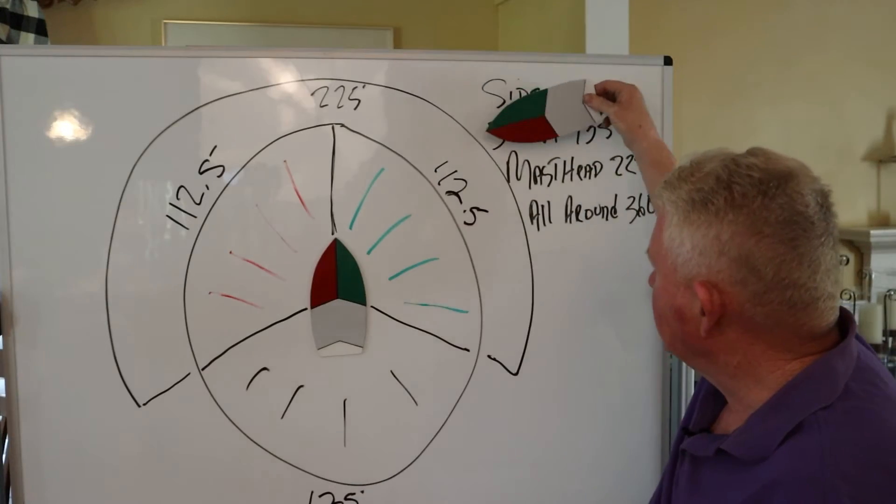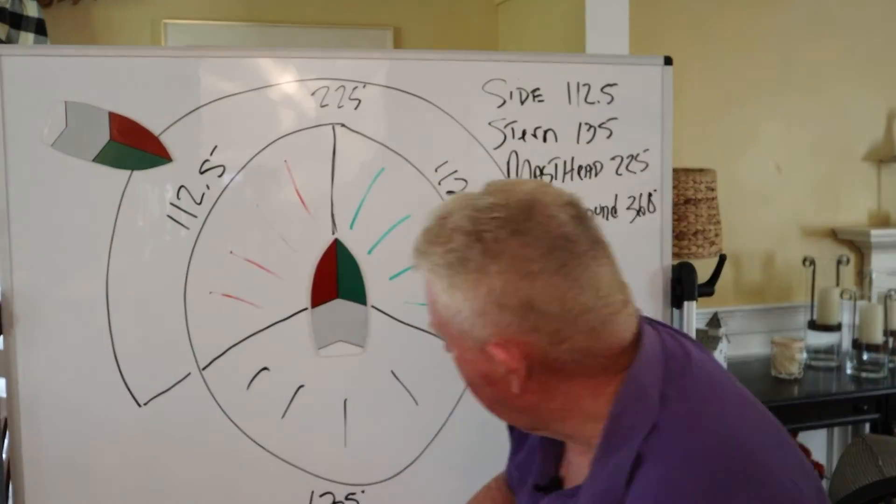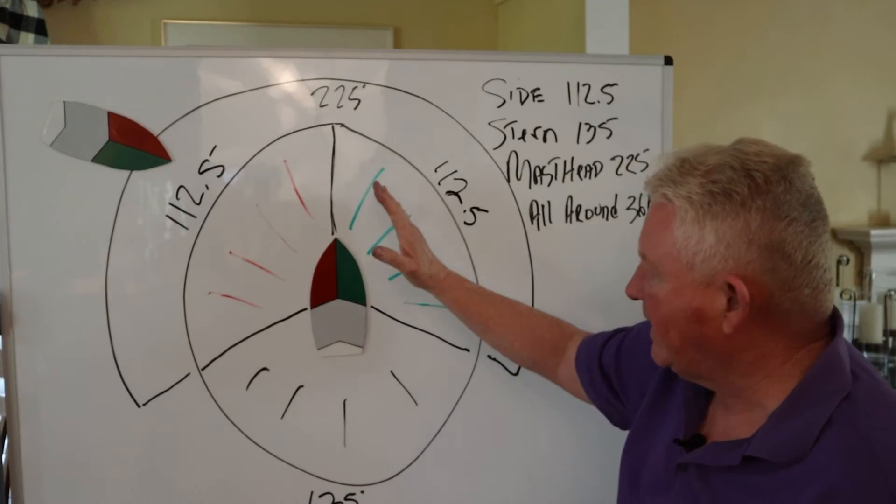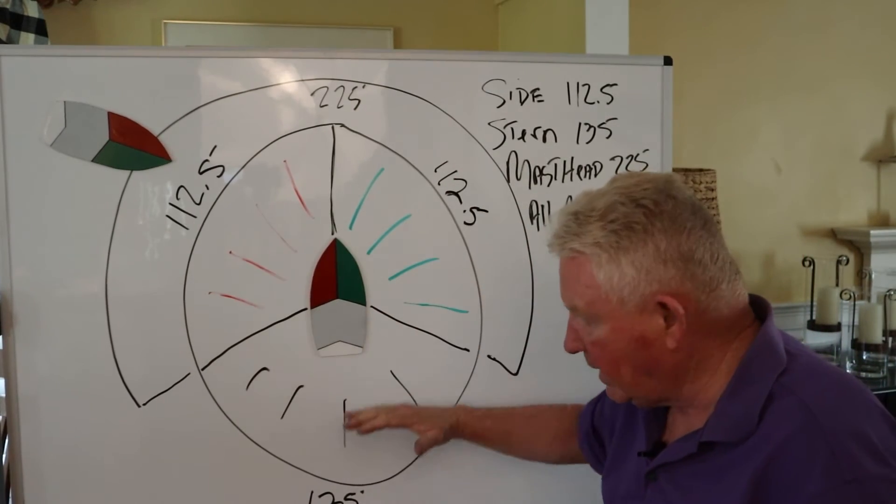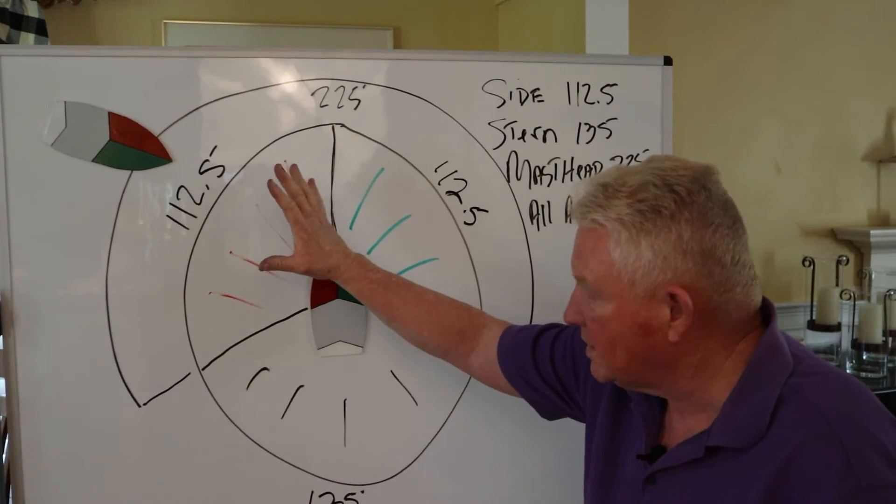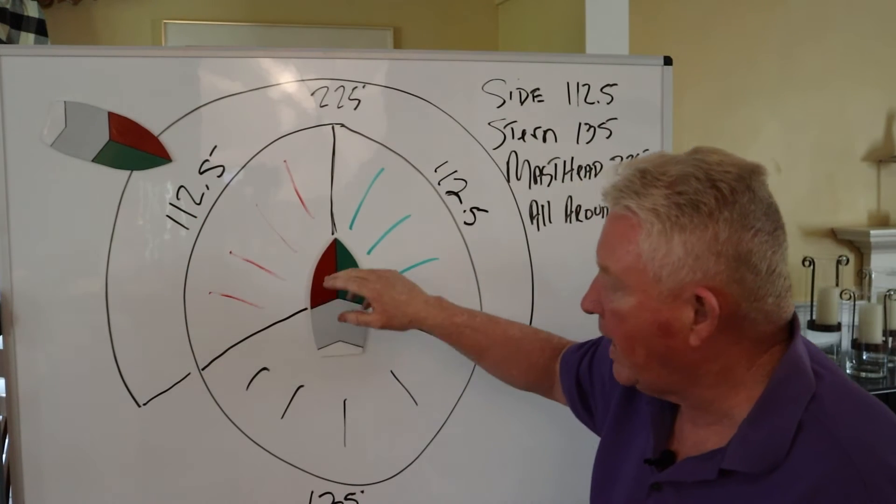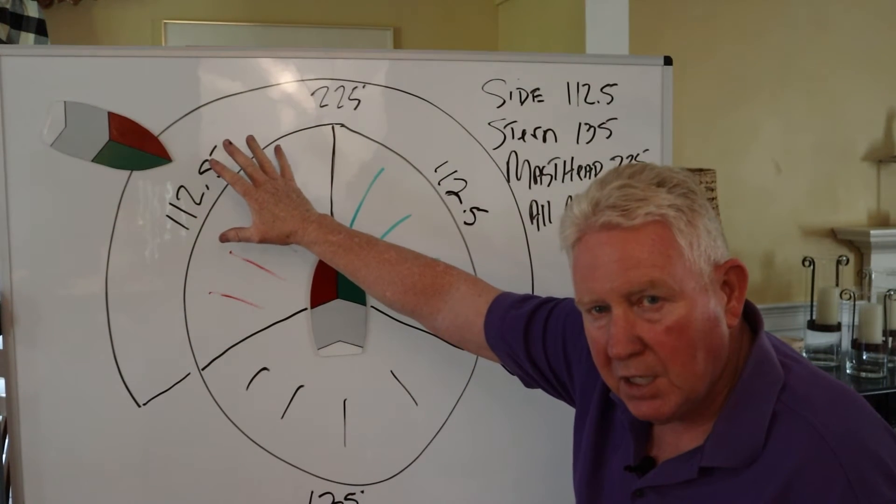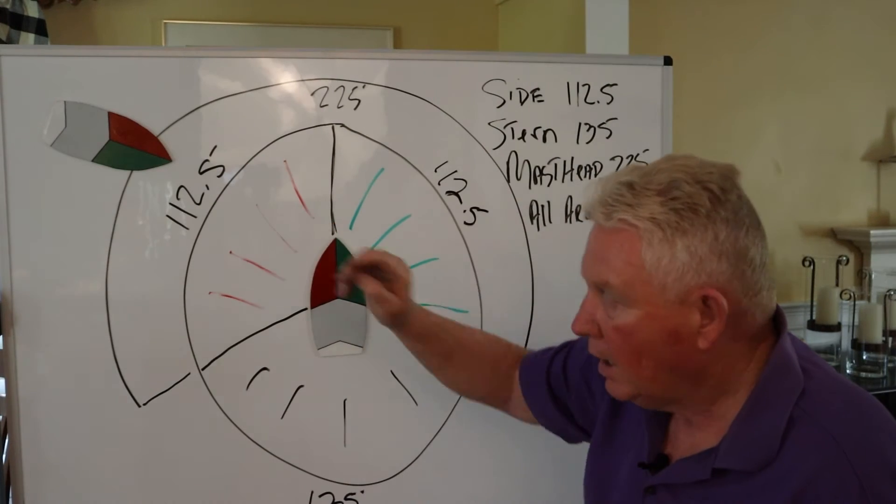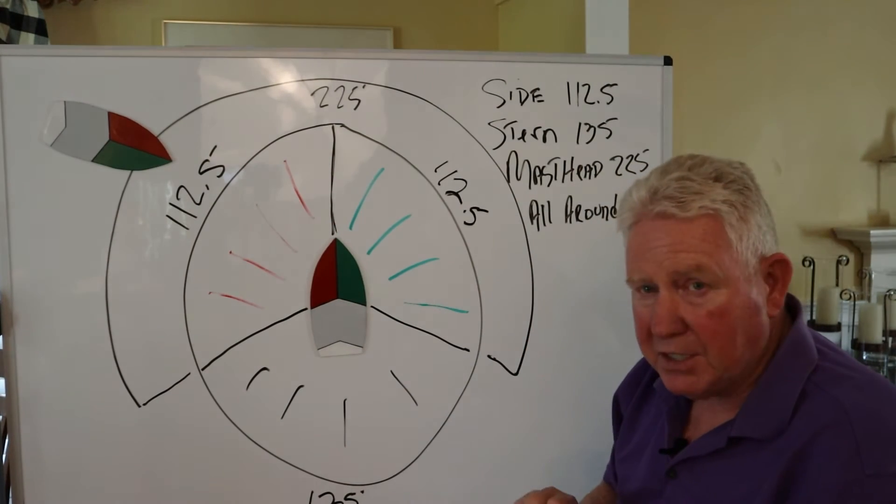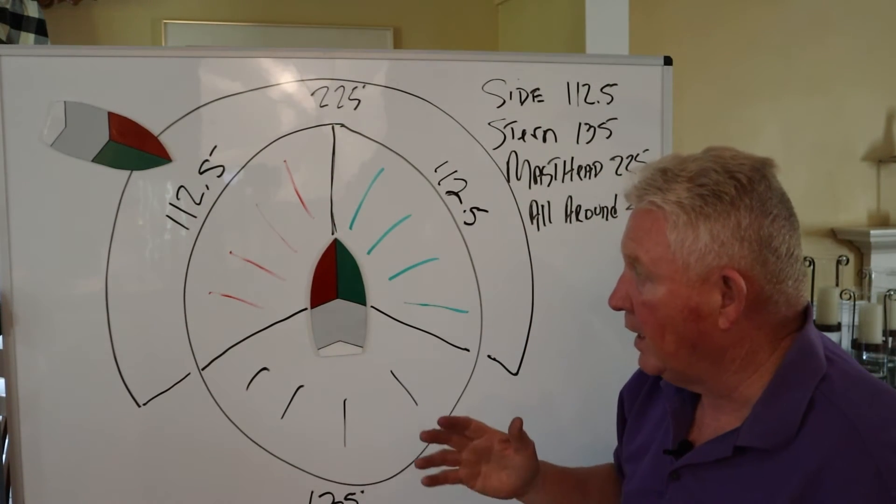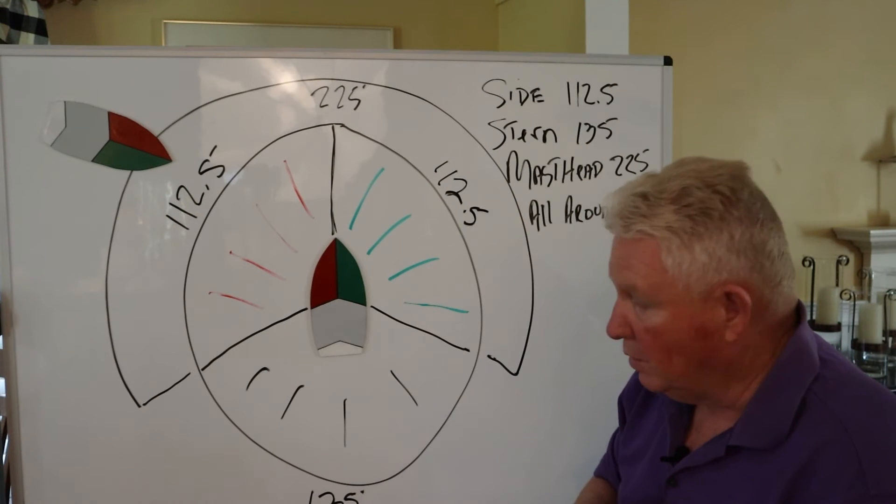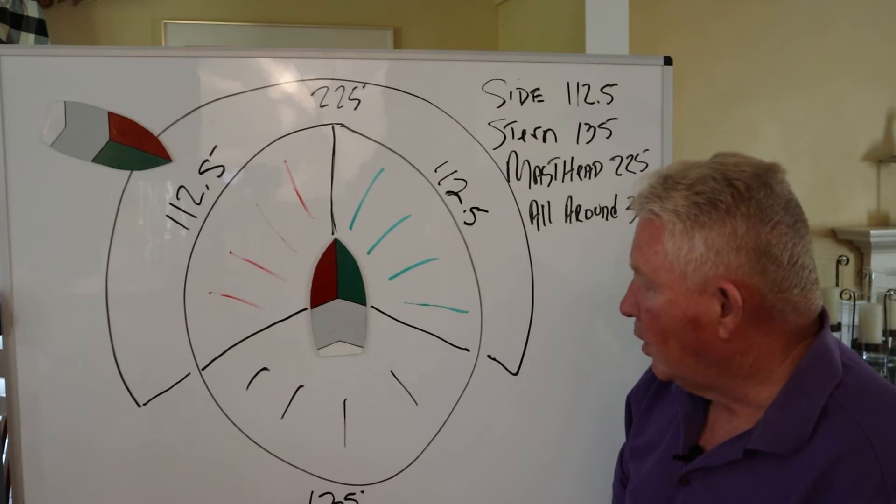But if they're sitting here, if they're sitting over here, they know that they're in this sector. They can't see your green light, they can't see your stern light, they can only see, they know that they're in that upper section of your port side. It's kind of amazing, this stuff has been around for so long, but it really is tried and true, it really works well.